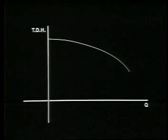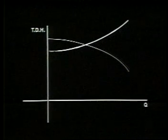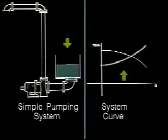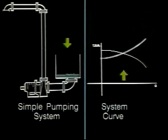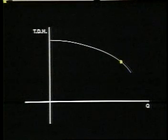In most systems, however, the system curve changes continuously. In the basic system being discussed, the level in tank A will fall as it is emptied into tank B. This increases the total static head, which moves the system curve and causes it to intersect the pump curve at a higher head and lower capacity — this is often referred to as the operating point moving back along the pump curve. In an extreme case where the tank is excessively high, the static head could increase to such an extent as to cause the operating point to move back to zero capacity.